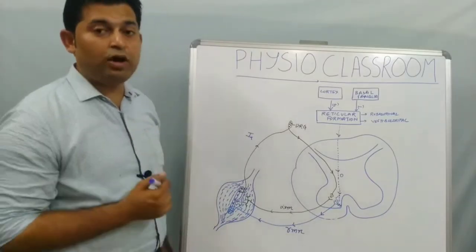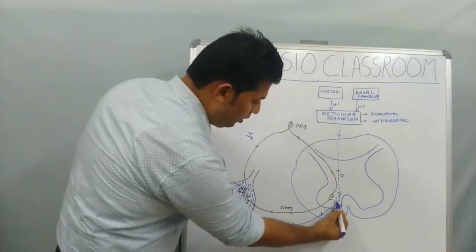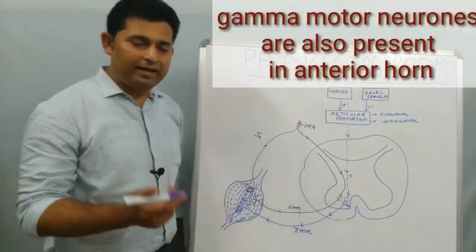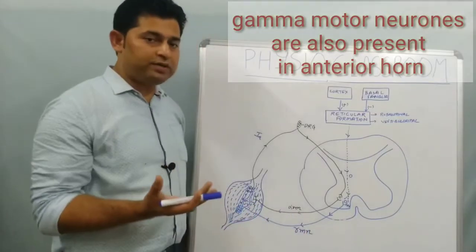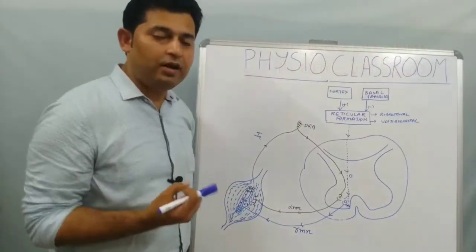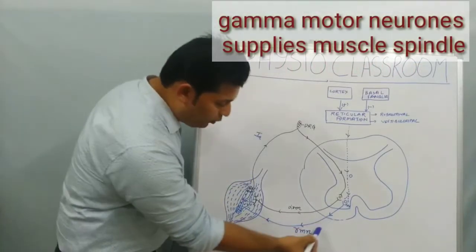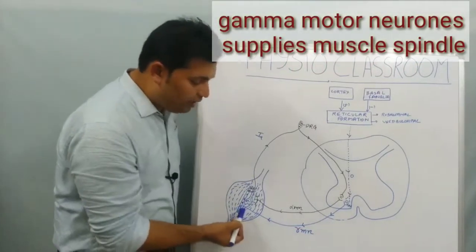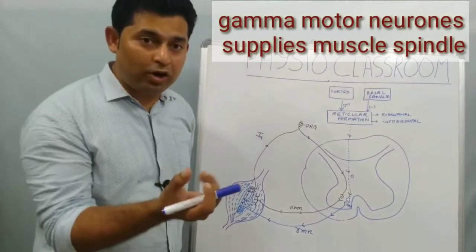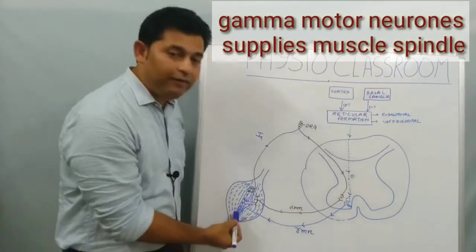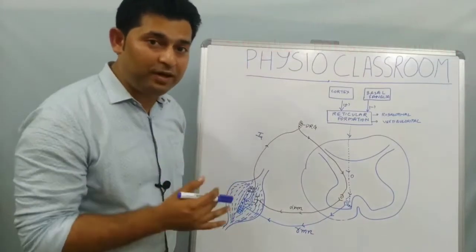Just as alpha motor neurons are responsible for producing contraction of the extrafusal fibers, gamma motor neurons are responsible for producing contraction of the intrafusal fiber, or the muscle spindle.